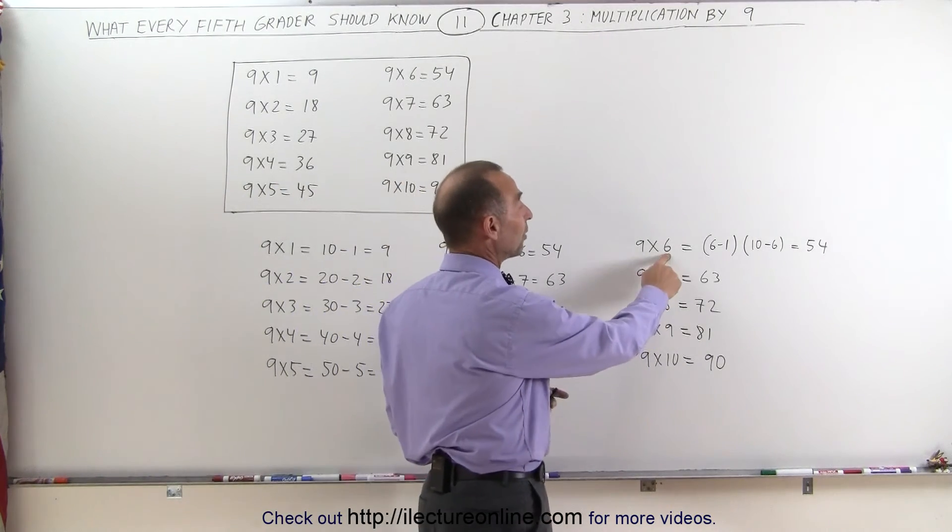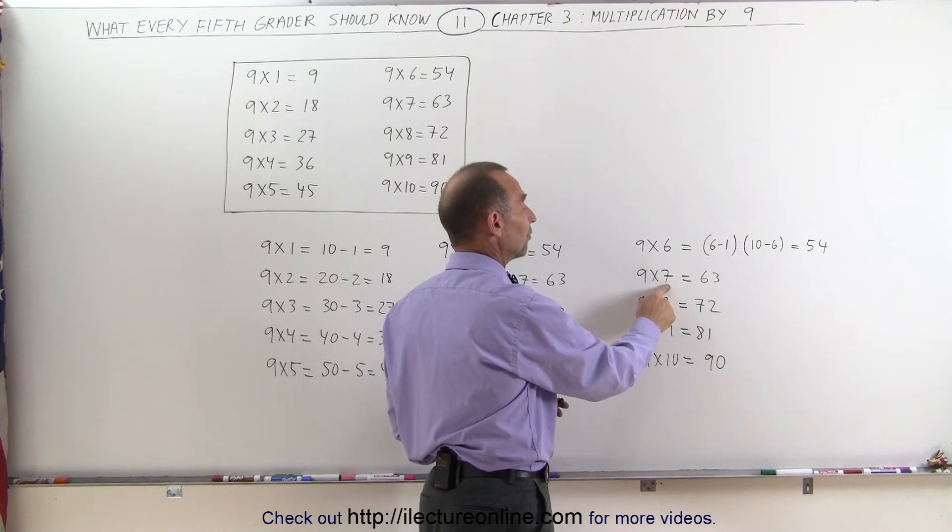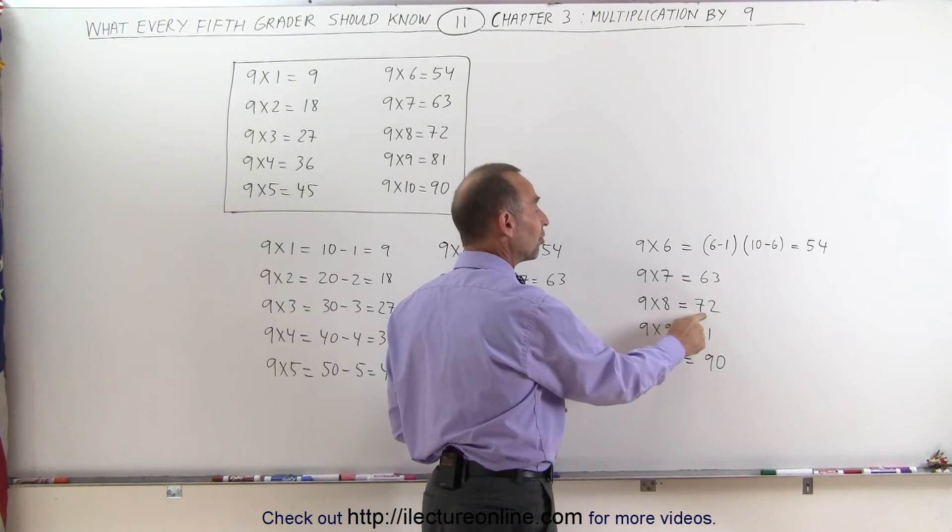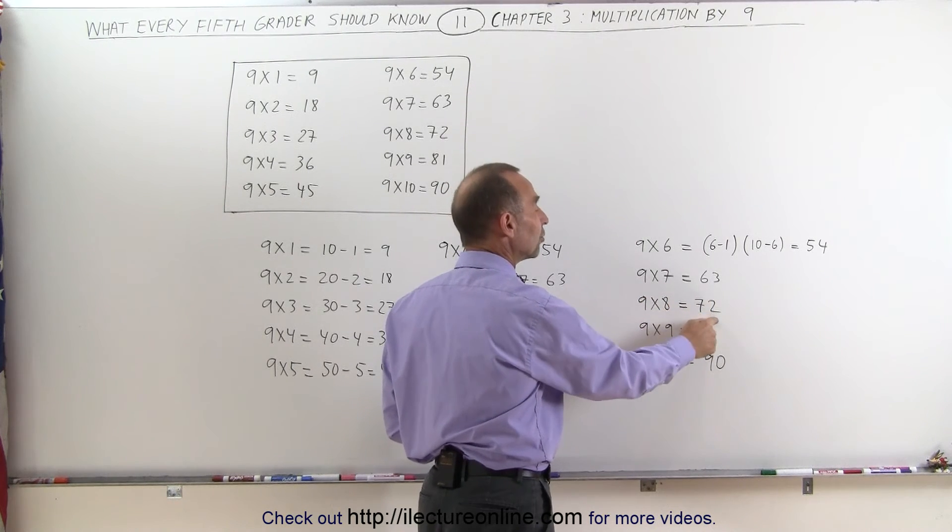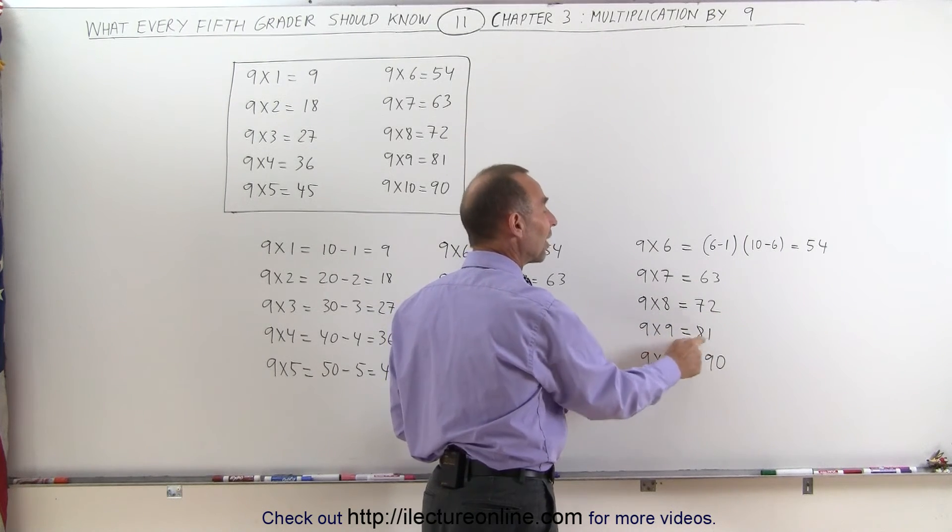then I simply subtracted 1 from that number and then added 10 minus that number. Subtract 1 from the number which is 6, add 10 minus 7 which is 3. Subtract 1 from that number which is 7, add 10 minus 8 which is 2. Subtract 1 from this number which is 8, and add 10 minus 9 which is 1.